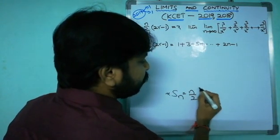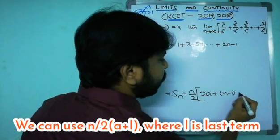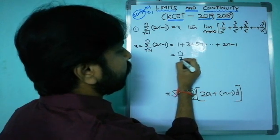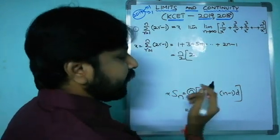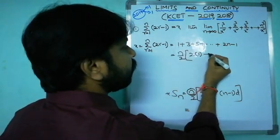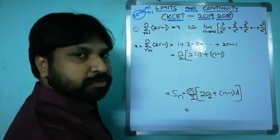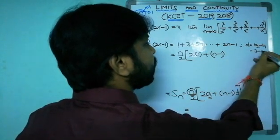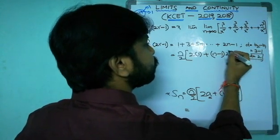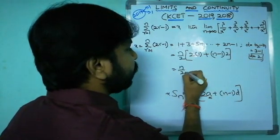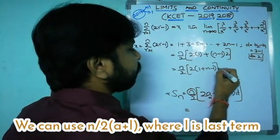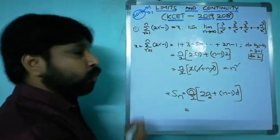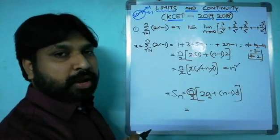The AP sum of n terms formula is Sn = n/2 × (2a + (n-1)d). Here d = t2 - t1 = 3 - 1 = 2, total terms = n, and first term a = 1. Substituting: take 2 as common from n/2 × (1 + (n-1)×2), the 2s cancel giving n × (1 + n - 1) = n × n = n². So x = n².